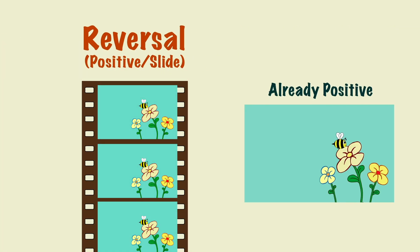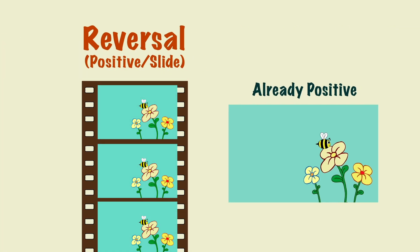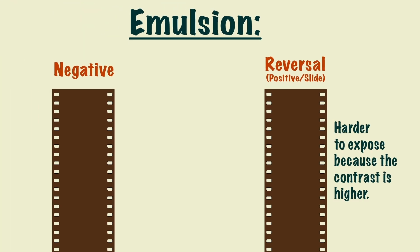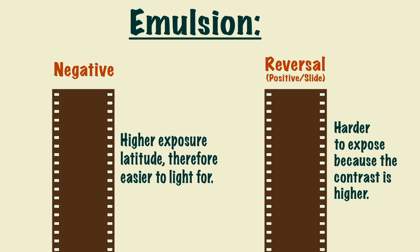Reversal film, however, is already captured as a positive image. The main downside to reversal film is that it's harder to expose because the contrast is higher. Negative film has a higher exposure latitude, therefore it's easier to light for.